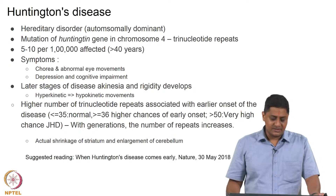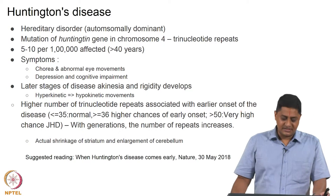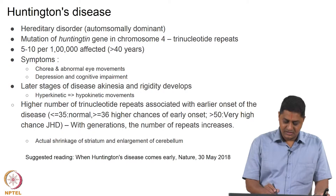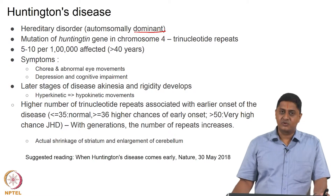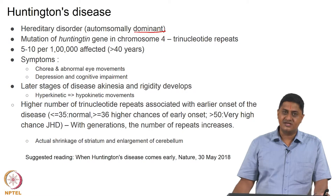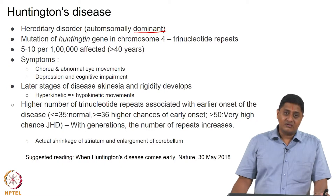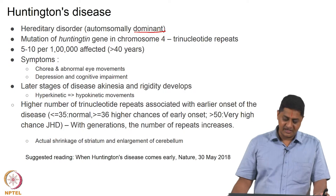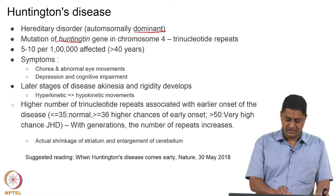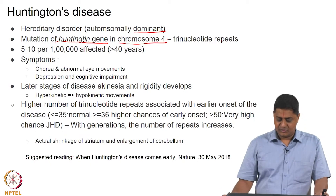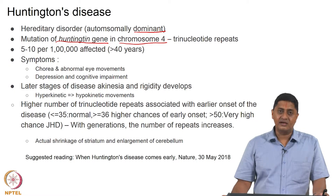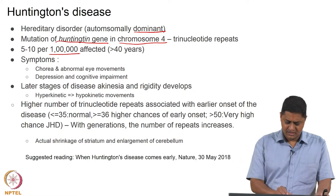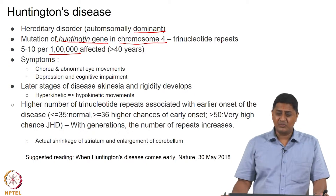Huntington's disease is a genetic, hereditary disorder and is autosomal dominant. That means if one of the parents has the disease, the child has a 50 percent chance of getting this disease. Fortunately, the gene responsible for causing this disease has been identified — it is a mutation of the huntingtin gene on chromosome 4, causing a higher number of trinucleotide repeats. The occurrence is about 5 to 10 per 100,000.